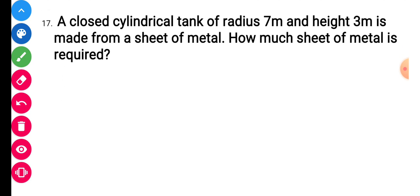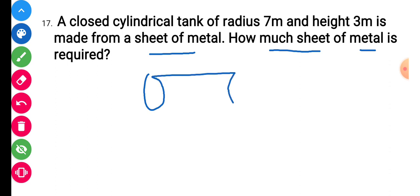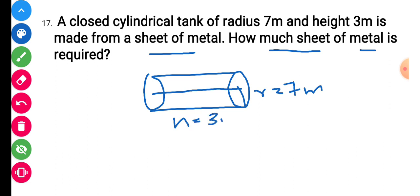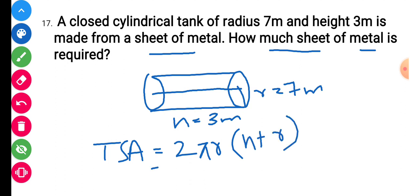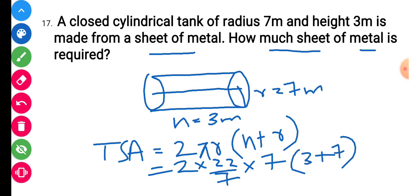Question number 17: a closed cylindrical tank of radius 7 meters and height 3 meters is made from sheet metal. How much sheet is required? Since it is closed, find the total surface area: 2πr(h + r) equals 2 into 22/7 into 7 into (3 + 7). The 7s cancel, giving 44 into 10 equals 440 meter square. That is the required answer.